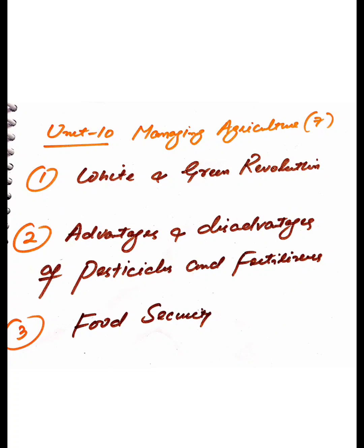Coming to one more unit, that is tenth unit, the last unit. That is Managing Agriculture. This may be 7 marks. First question is what are white and green revolution? Second one is what are advantages and disadvantages of pesticides and fertilizers?